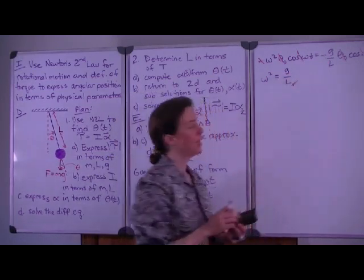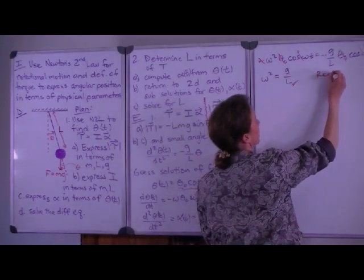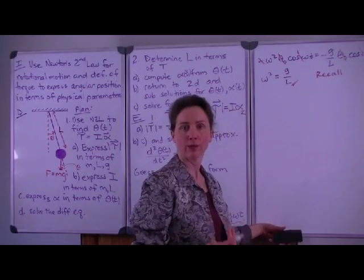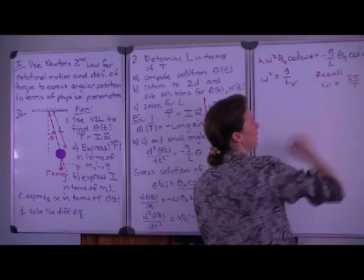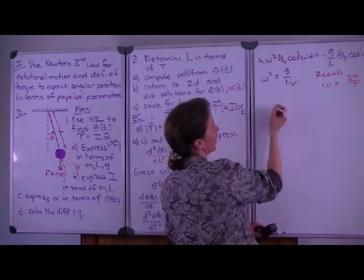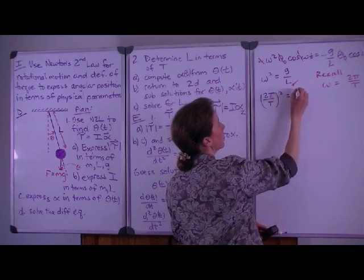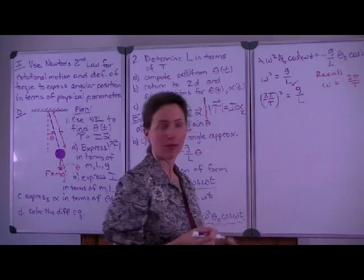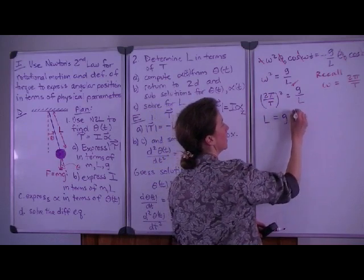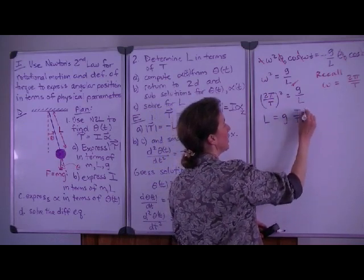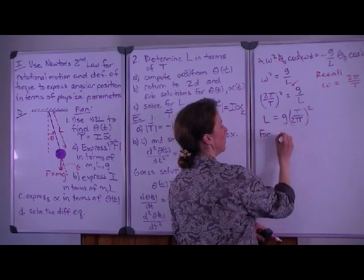It's getting very simple at this point. What are we looking for? We're looking for l, and we're looking for l in terms of the period. So now we need to recall that the relationship between the angular frequency and the period is this: omega is equal to 2pi over the period. So we can substitute that into our expression: 2pi over the period squared equals g over l. We're still trying to get l by itself, and so we can multiply by l and divide by this term, and we will get that the length is related to the period in this way: L = gT²/(4π²).